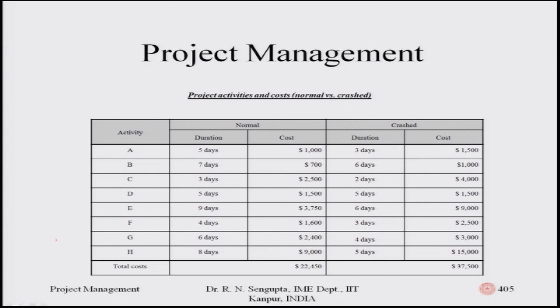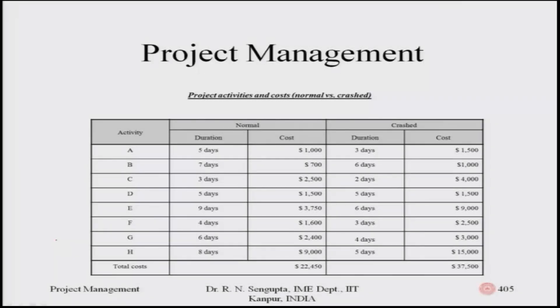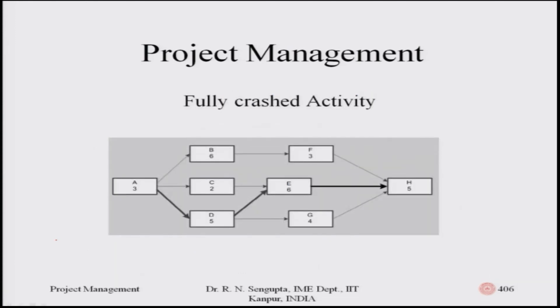When crashed, A can be reduced from five to three days — a maximum crash of two days. B can be crashed by one day with increased cost (from seven thousand to one thousand additional). C crashes by one day with cost rising from two thousand five hundred to four thousand. D has zero crash days so no cost increase. The fully crashed activities and their costs are given accordingly. The only key difference from the earlier problem is that this uses activity-on-node rather than activity-on-arc representation.